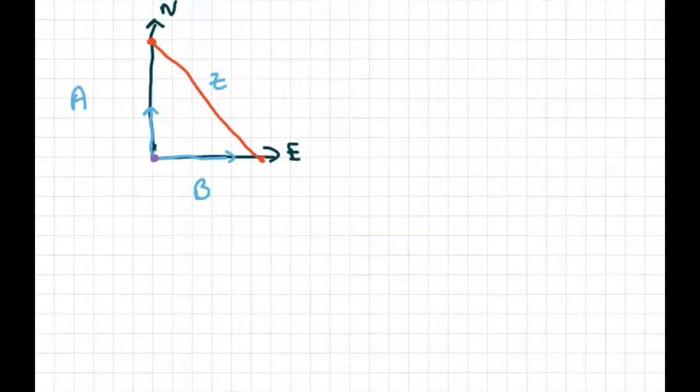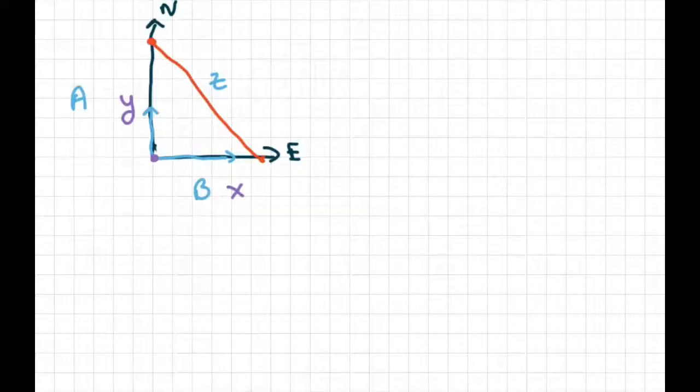So whenever we see right triangles and related rate problems, we're looking to use the Pythagorean theorem. So we're going to call the distance that boat A travels Y because that's going north. And we'll call the distance that boat B travels X. And we're looking to see how fast Z is growing. And how fast Z is growing is going to be DZ with respect to time.